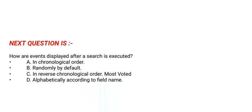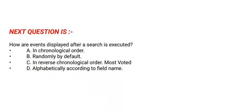The correct option is Option A. Next question is: how are events displayed after a search is executed? Options are: Option A: In chronological order. Option B: Randomly by default. Option C: In reverse chronological order, most voted. Option D: Alphabetically according to field name.